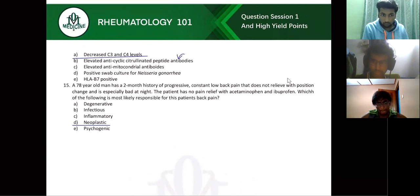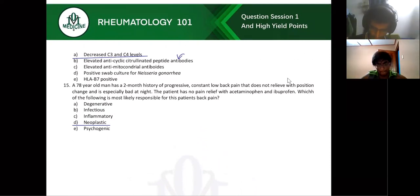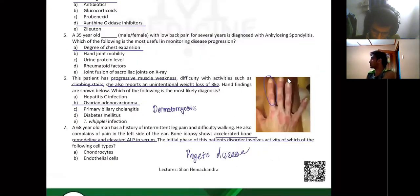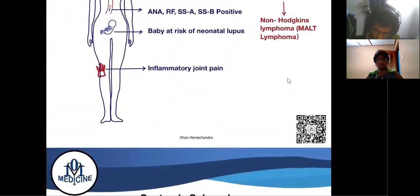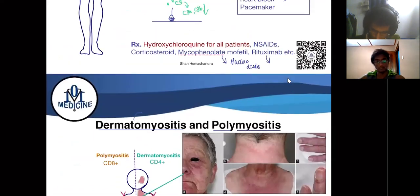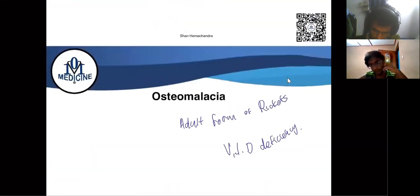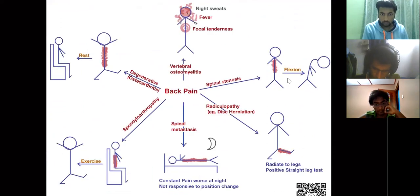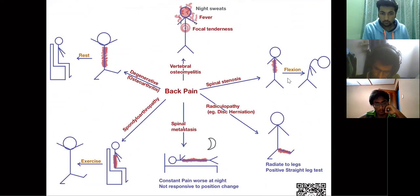Neoplastic back pain: constant, progressive back pain that does not relieve with position change and is especially bad at night. If you look at the back pain image — constant pain worse at night, not responsive to position change — that is the neoplastic category.